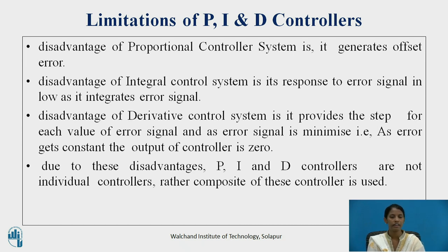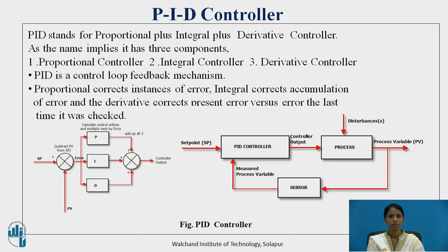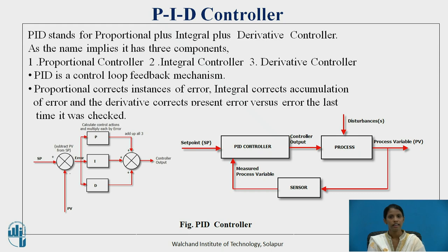Due to the disadvantages of P, I, and D controllers, these controllers are not used individually but are used in combination — PI, PD, or PID controllers. PID stands for proportional, integral, and derivative. As the name implies, it has three controllers: proportional, integral, and derivative. PID is a control loop feedback mechanism. Proportional corrects instances of error, integral corrects accumulation of error, and derivative corrects the present error versus the error from the last time it was checked. In place of the controller, the combination of P, I, and D controllers is used to get a controlled output.